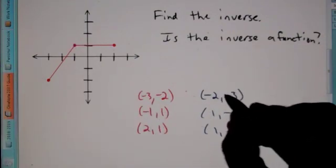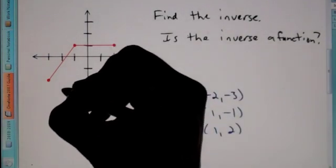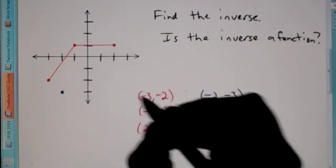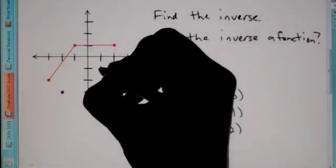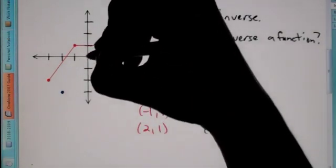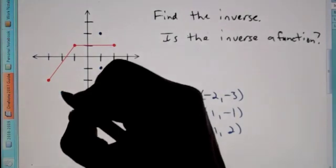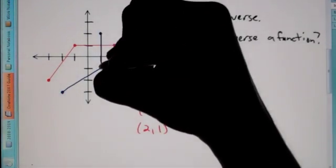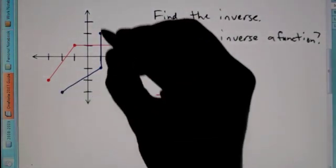So now we're going to plot these new points. The point (-2, -3): back 2, down 3. The point (1, -1): over 1, down 1. And lastly (1, 2): over 1, up 2. If I were to connect the dots here, this is what I would get. So this is the inverse right here.